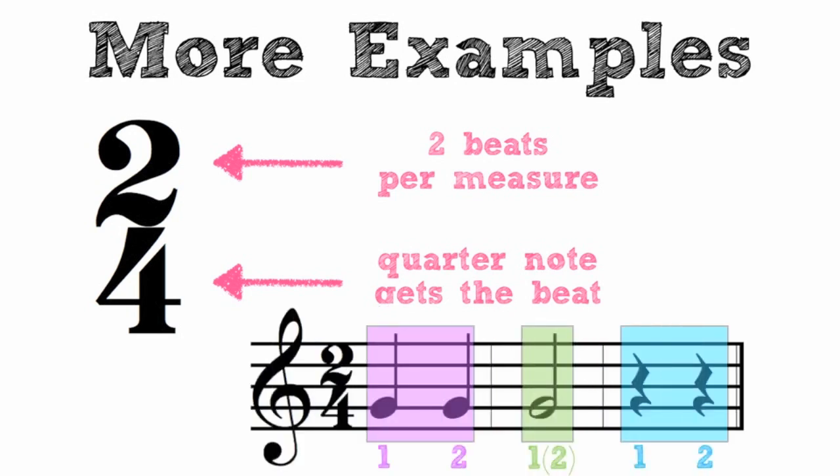Here are a few measures that show you what a measure of 2-4 might look like. In the first measure you can see two quarter notes beats 1 and 2. In the second measure you can see a half note which lasts for two beats consecutively and in the last measure you see two quarter rests which means they are not making sound but they do take up two beats.